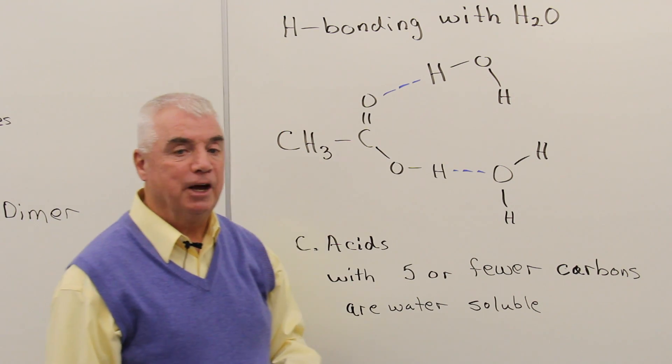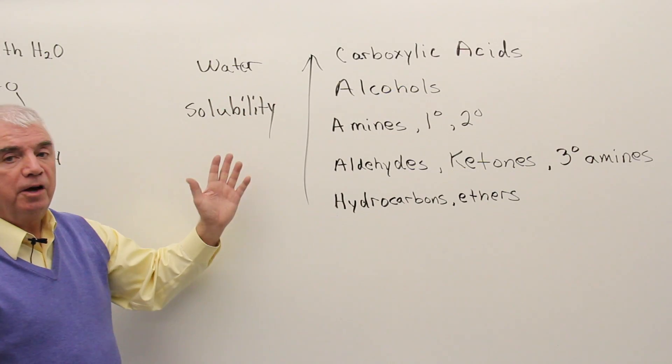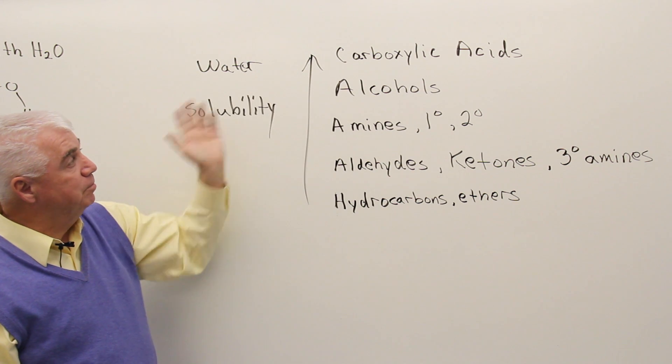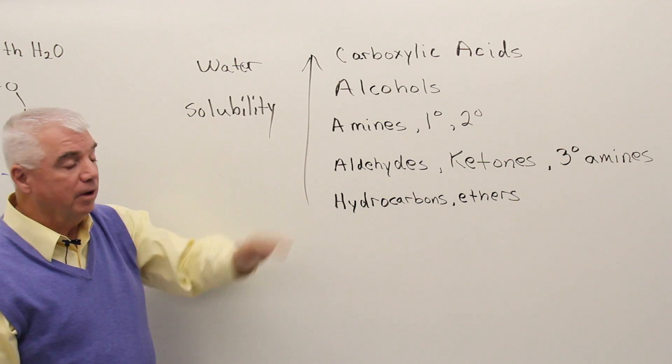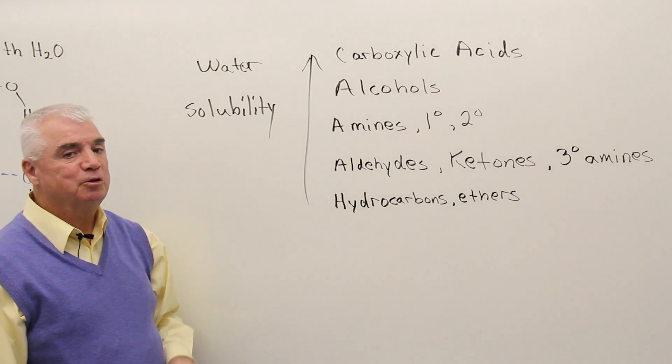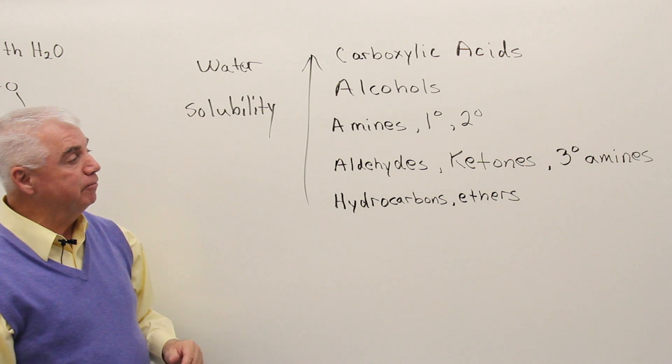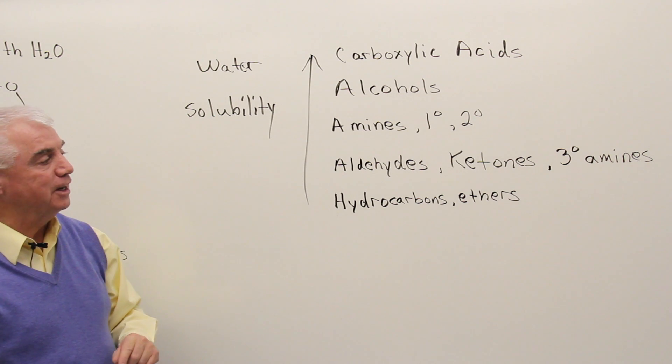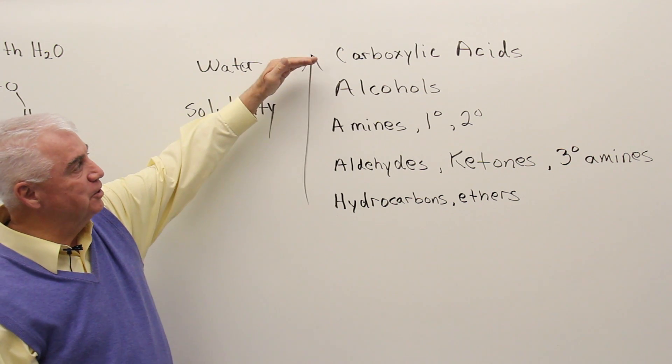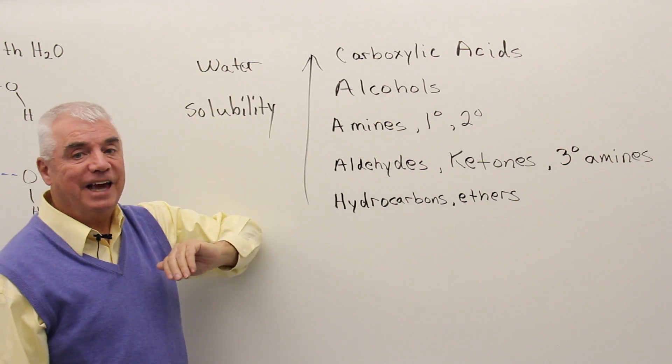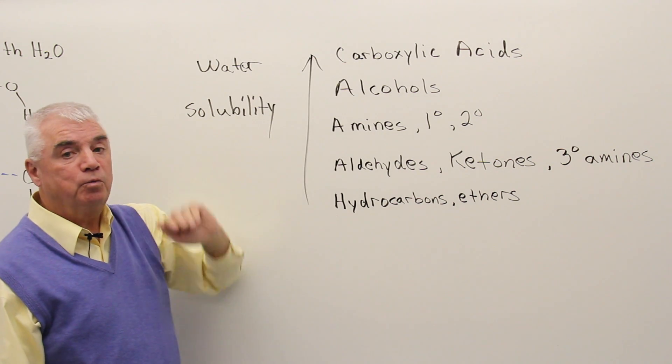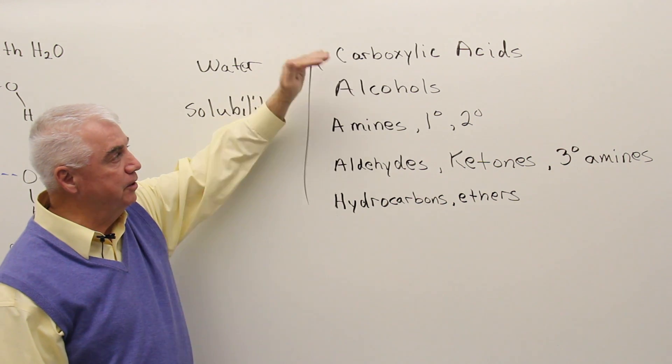Let's look at a summary diagram. The water solubility chart for the family of organic compounds looks almost exactly like the one that we just looked at for boiling points. There's only one exception. We'll come to that in just a second. Carboxylic acids hydrogen bond with water very efficiently. They're at the top.